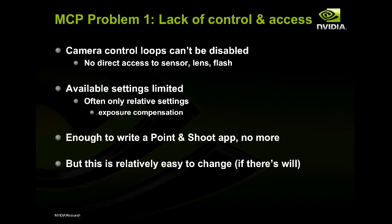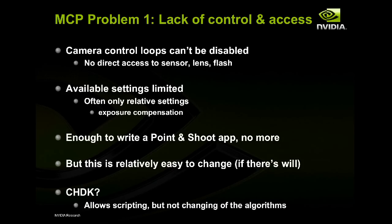When we started implementing these computational photography applications on cell phones, the first problem was that the APIs were not very expressive — no direct access to sensor, lens, or flash. There's a control loop called 3A — auto exposure, auto focus, auto white balance — that tries to figure out which parameters to use. But those are precisely the parameters you want to control yourself if you're trying to be smarter than the camera. There's something called CHDK, the Canon Hack SDK, but that only allows you to script your camera — it doesn't let you change those 3A algorithms.